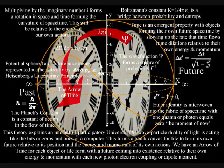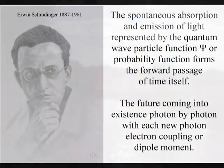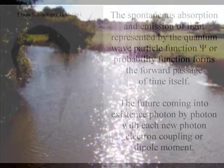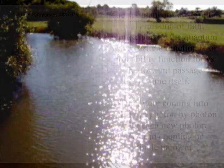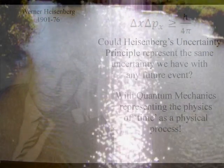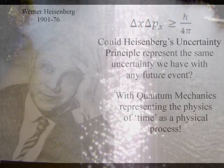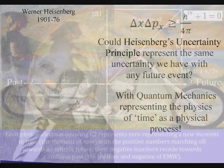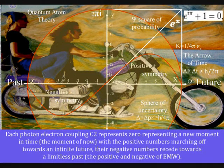The first is that the quantum wave particle function or probability function of quantum mechanics represents the forward passage of time itself, photon by photon. And the second is that Heisenberg's uncertainty principle that is formed by the probability function is the same uncertainty we have with any future event within our own reference frame.